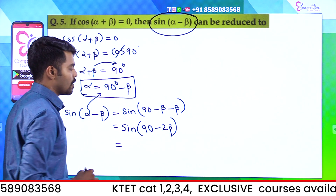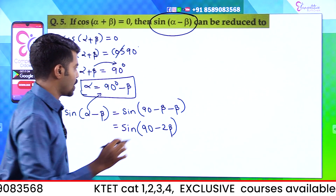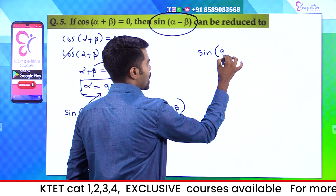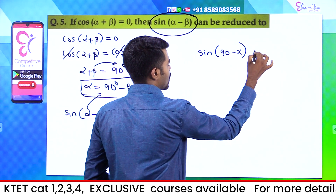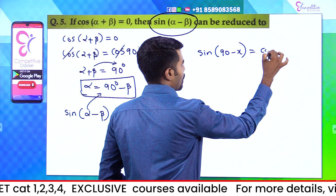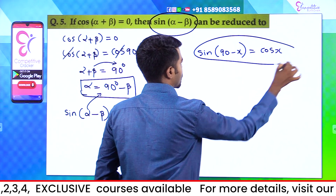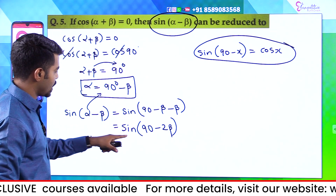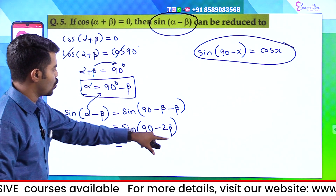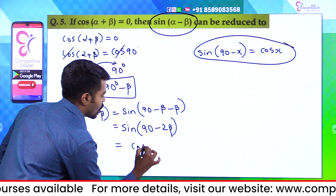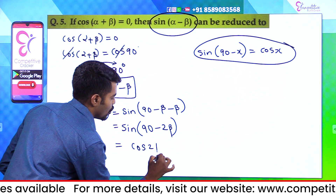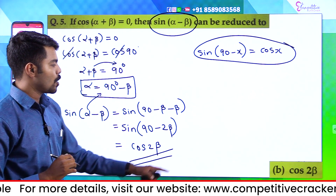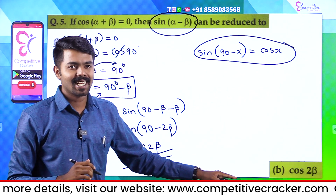That equals sin(90°−2β). Using the identity sin(90°−x) = cos x, we get sin(90°−2β) = cos 2β. Therefore the answer is Option B, cos 2β.